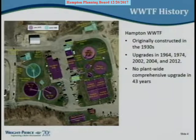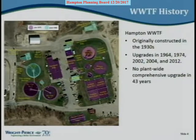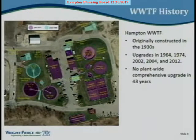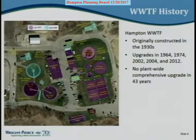Here's an aerial of the plant, color-coded by vintage of equipment and tankage on site. Hampton may be the oldest continuously operated plant in the state - tied with Durham - and one of the first treatment plants on the eastern seaboard in a coastal community. Prior to the upgrade in the 1930s, there was a sewer outfall pipe running out at the end of Church Street into the ocean, which had issues with the beach, leading to the decision to build the treatment plant.